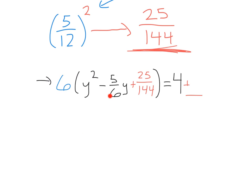That brings us to 6 times y squared minus 5/6 plus 25 over 144. And when we add that to the right side, we have to do 6 times 25 over 144, which is going to be 150 over 144.